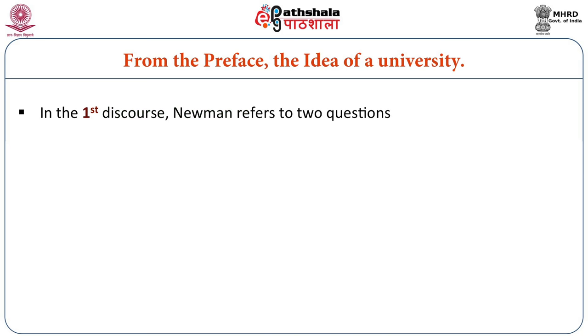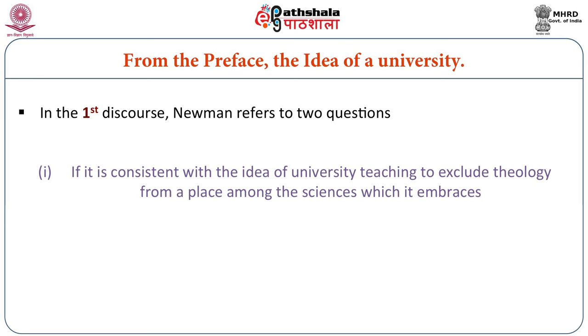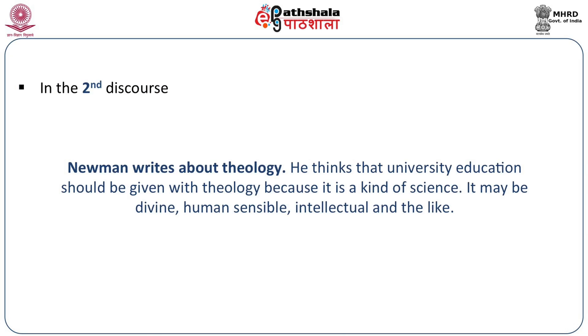In the first discourse, Newman refers to two questions: whether it is consistent with the idea of university teaching to exclude theology from a place among the sciences which it embraces, and whether it is consistent with that idea to make the useful arts and science its direct and principal concern. Newman was not satisfied with the way universities were working. Being at the helm of affairs, he always tried to put his point of view regarding university education. The question of whether education in the university is moral or purely academic was central to his concerns, and he expressed his points of view regarding this issue very clearly.